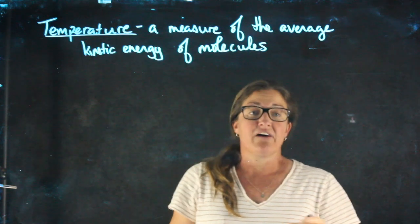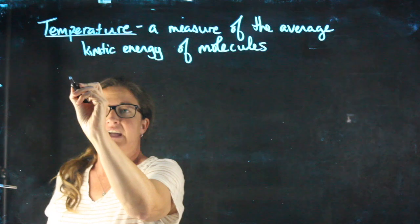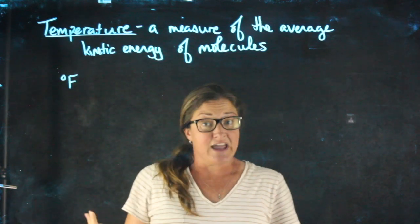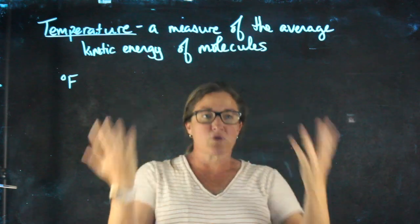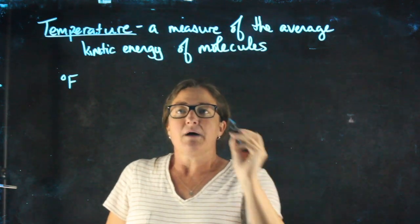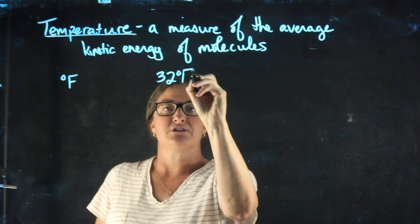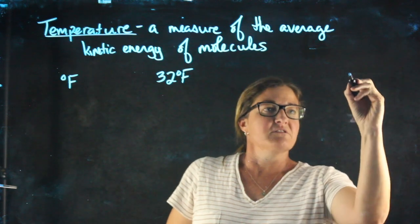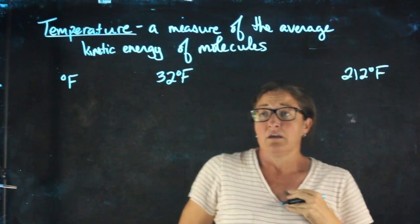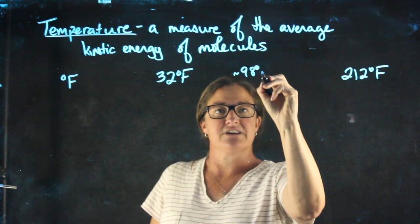The temperature scale that we use in the United States, and like one other country in the world, is the Fahrenheit scale. We're not going to use that in science, but I want to use it briefly as a reference point. You probably know that pure water freezes at 32 degrees Fahrenheit and boils at 212 degrees Fahrenheit. You probably also know that body temperature is about 98 degrees Fahrenheit.